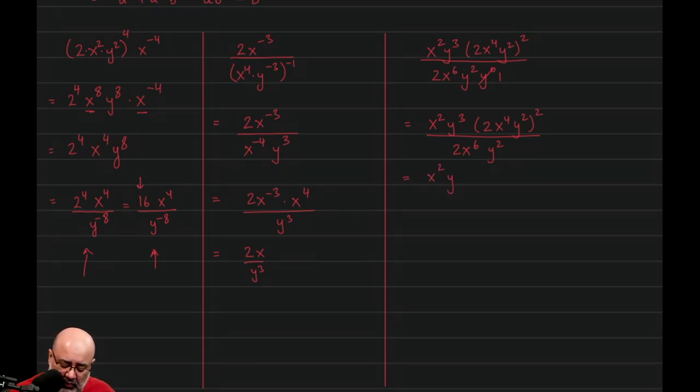So x squared y cubed stay the same. And when I apply this power inside, I get 2 squared x to the 8y to the 4 over the denominator stays the same.